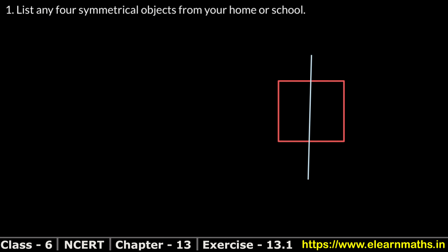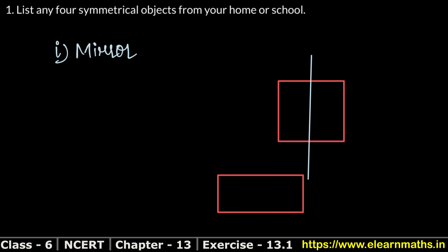Our first example is a mirror. If you look at the mirror, it should be square or rectangular. The line of symmetry will divide it equally, making both sides the same. So the mirror will be symmetrical — both portions are identical.